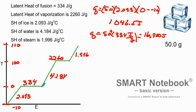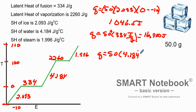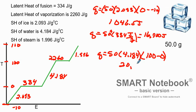Now we're heating the water from zero degrees all the way up to 100 degrees, so we use the q equation: 50 grams multiplied by the specific heat of water, multiplied by the temperature change of 100 minus zero. That gives us 20,920 joules.